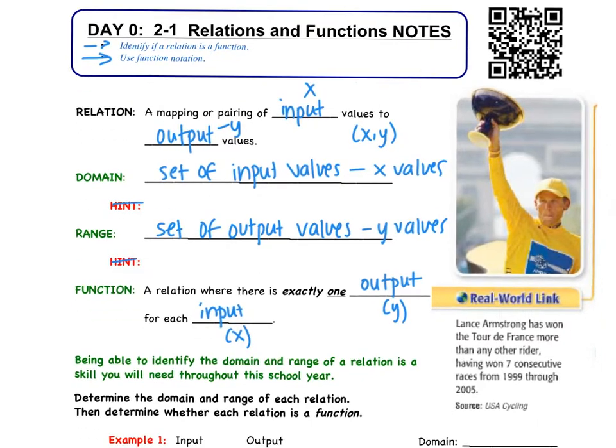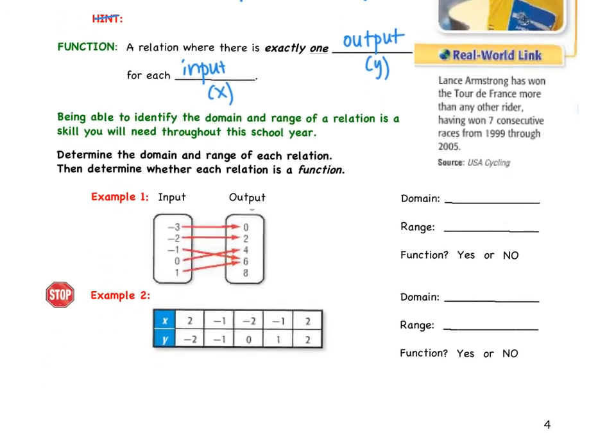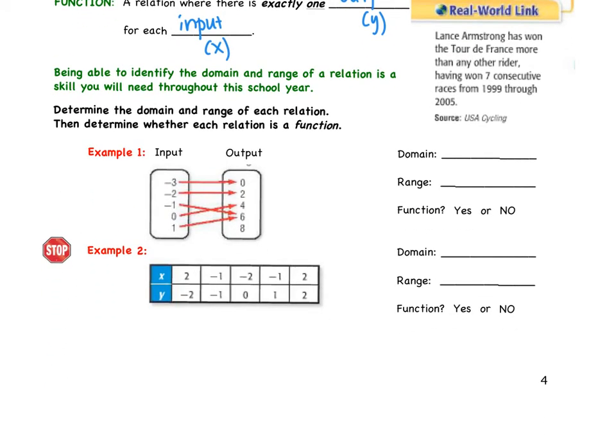So we're going to do some examples together down below. In green, you see, you should be able to identify the domain and range of a relation. And that's a skill you're going to use throughout the year. So we have examples one and two. We need to determine the domain and the range. If we look at example one, the domain, again, these are the x values. The input values, in this case, negative 3, negative 2, negative 1, 0, and 1.